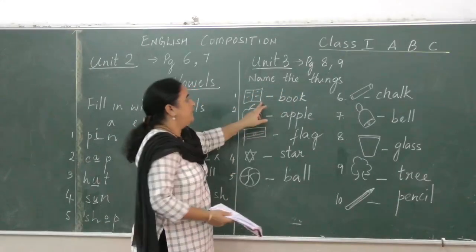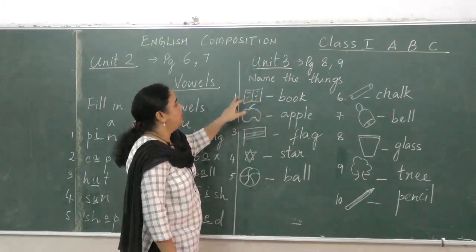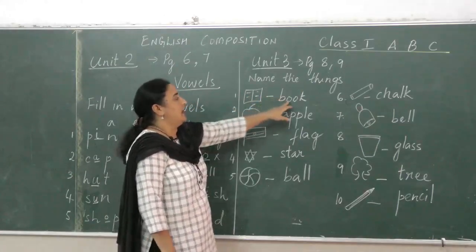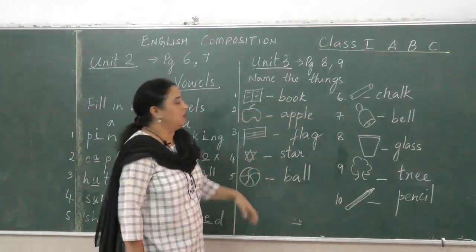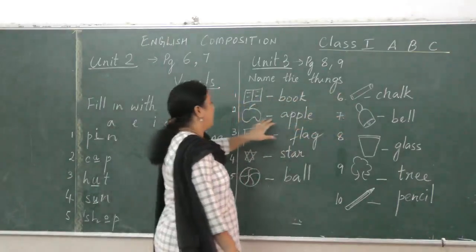Name the things. So you have to draw the picture. You draw the picture, write number 1, draw the picture, and write the word. What is it? It is a book. Then the second picture is apple. You just have to name, these are all things. Apple.